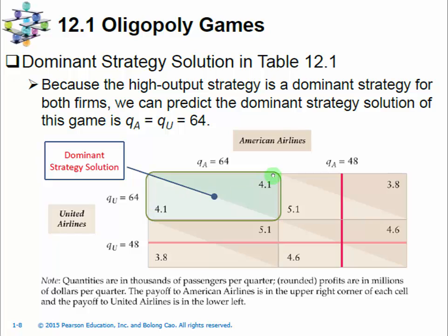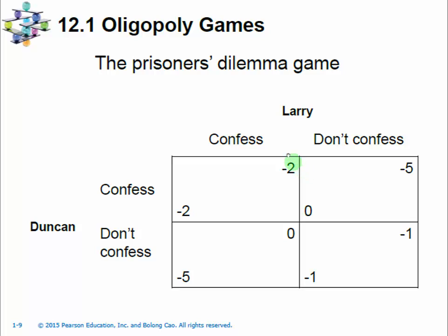However, 4.1 for each player is less than 4.6 for each player. So this outcome, even though it is a rational result, is not the best possible outcome. This kind of situation is called a prisoner's dilemma. In a prisoner's dilemma, all players have dominant strategies that lead to a payoff that is inferior to what they could achieve if they cooperated. Let's talk about the most famous game — the prisoner's dilemma.